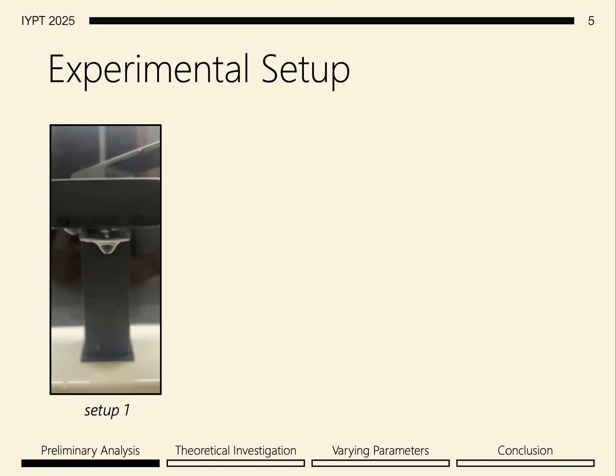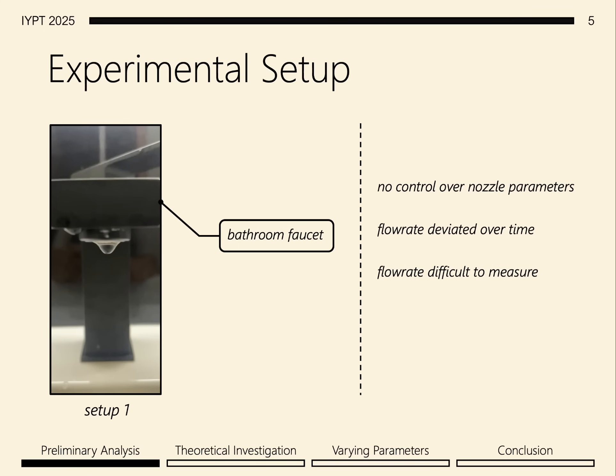For my version of the experimental setup, I began with just a bathroom faucet at home. However, some problems I faced were that I had no control over the nozzle parameters, the flow rate deviated over time, the flow rate was difficult to measure, and the valve was also too sensitive.